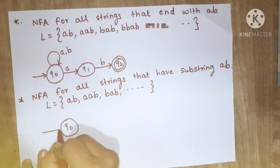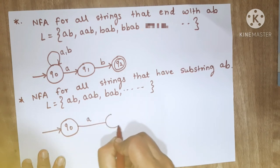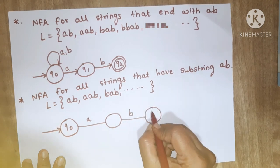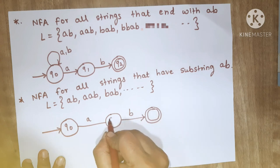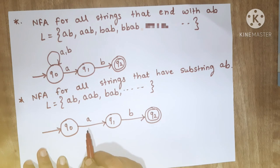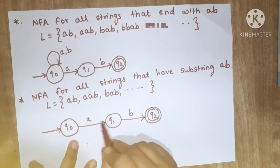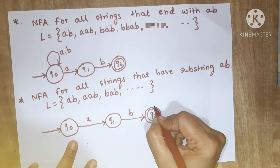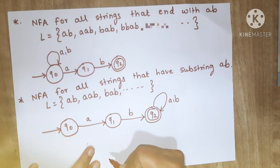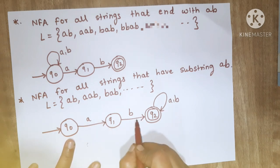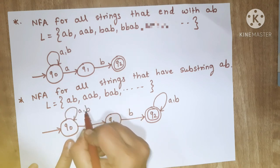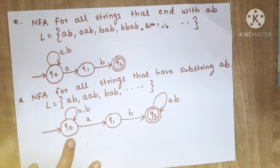So this is Q0 state. We transition on A and then B to reach a final state, meaning after getting AB I go to the final state. Every string should contain AB as a sub-string. After that AB you can have any combination of A and B, so I will show a self-loop on the final state for A and B. Also before this AB as a sub-string I can have any combination of A and B, so I will show a self-loop on Q0 for A and B.